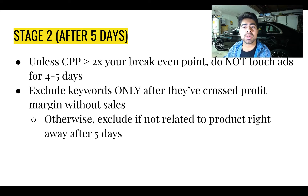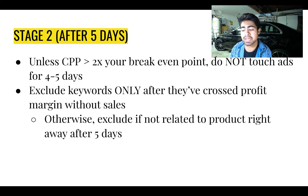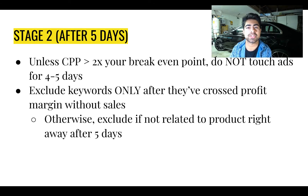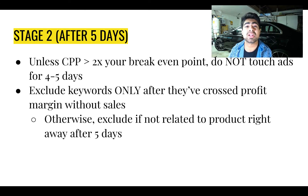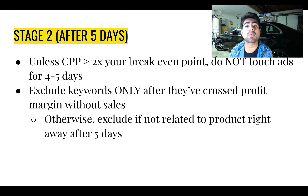Stage 2 is where we really decide whether we want to continue with the product or stop it and go back to the basics. Unless your cost per purchase for the product is more than double what your normal cost per product should be, you do not want to touch the ad for four to five days. It does not matter whether it's getting a higher cost per purchase than your profit margin or a lower one — you want to let it fully optimize for four to five days. That is one thing about Google: it is a waiting game. With Facebook you can make daily decisions, but with Google Ads you have to make decisions based on three to five day metrics.